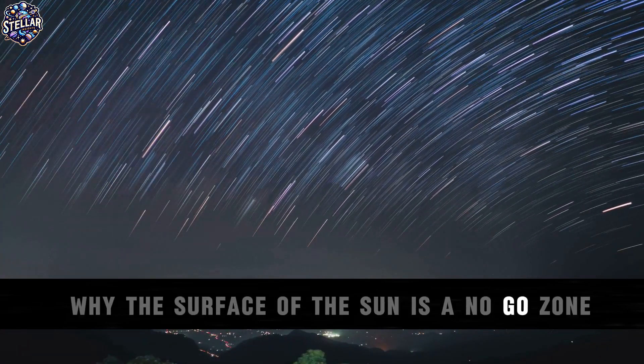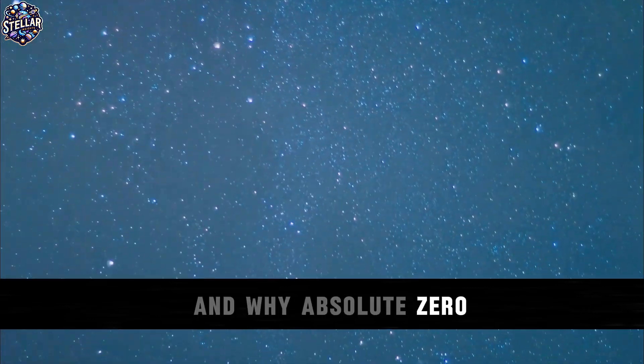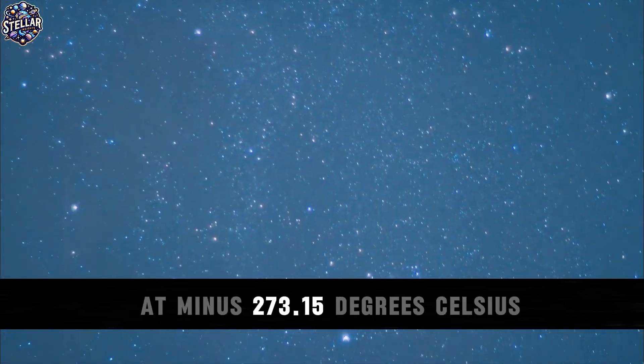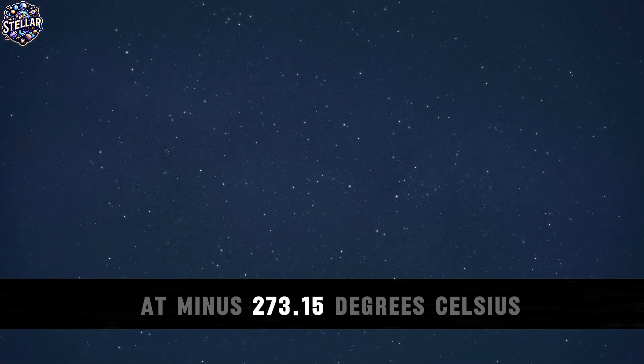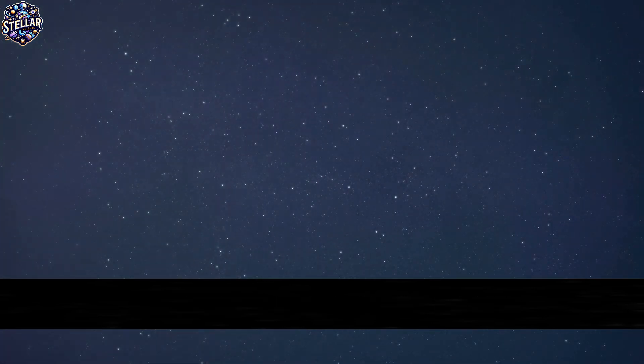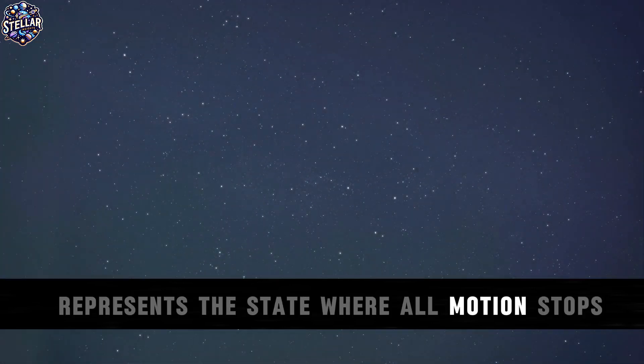Why the surface of the sun is a no-go zone, and why absolute zero at minus 273.15 degrees Celsius represents the state where all motion stops.